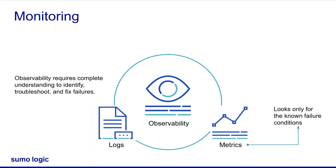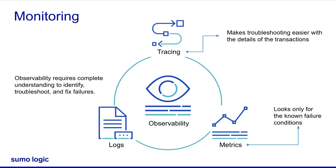So how do we do it? Trace the transactions. Troubleshooting problems real-time in distributed, dynamic cloud, and microservice environments is very difficult. Transaction traces make this a lot easier by letting you see details about what exactly is happening and how it affects your users.